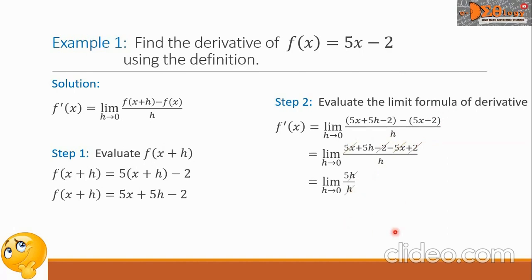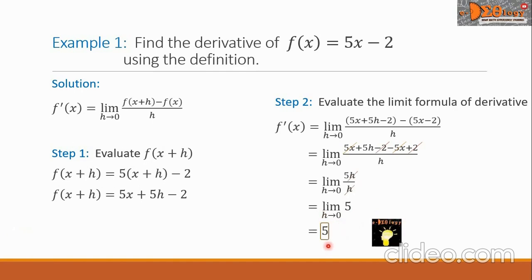Our function is now simplified into a constant 5. So the limit of 5 as h approaches 0 gives us our answer, which is 5. This is our final answer — this is the derivative of our function.